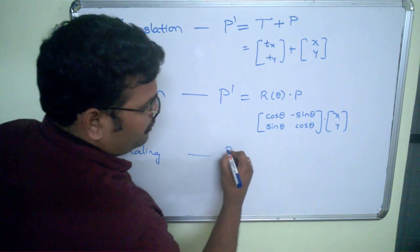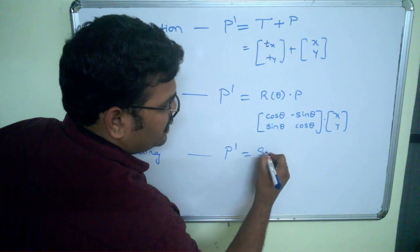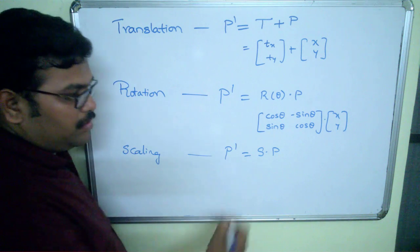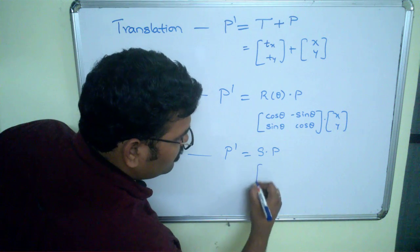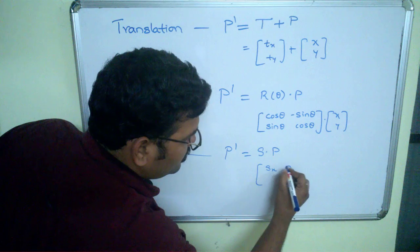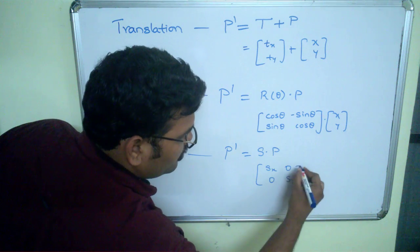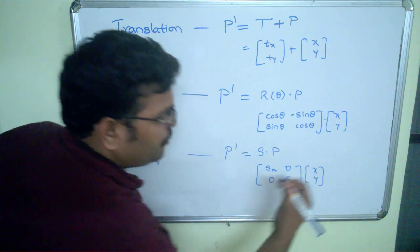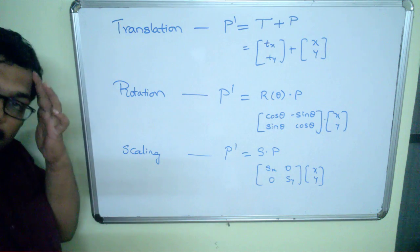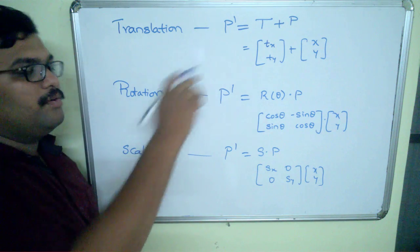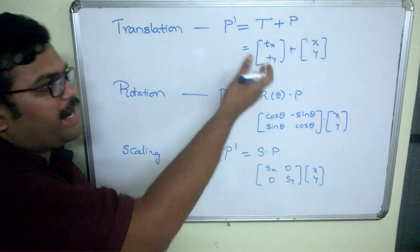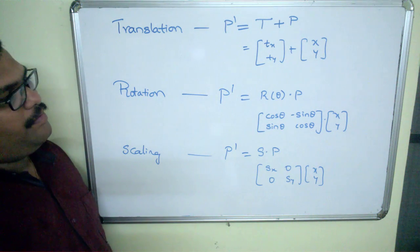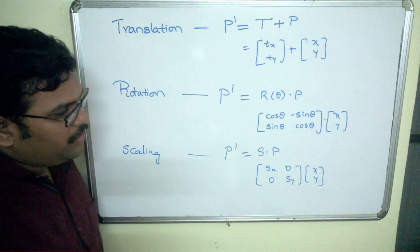Similarly for scaling, P-dash equals the scaling parameter S into P. This can be written in matrix form as [Sx, 0; 0, Sy] into [x, y]. These are the formulas and matrix representations we have derived for all three basic transformation functions.